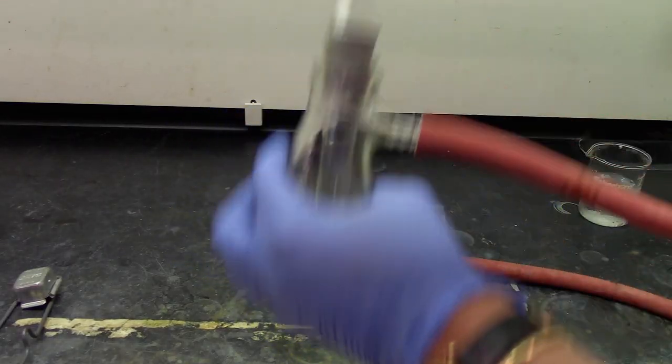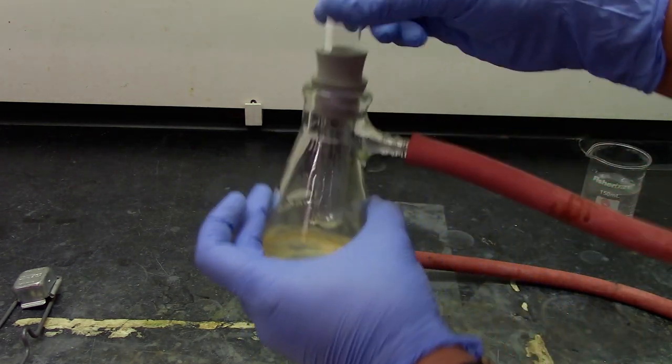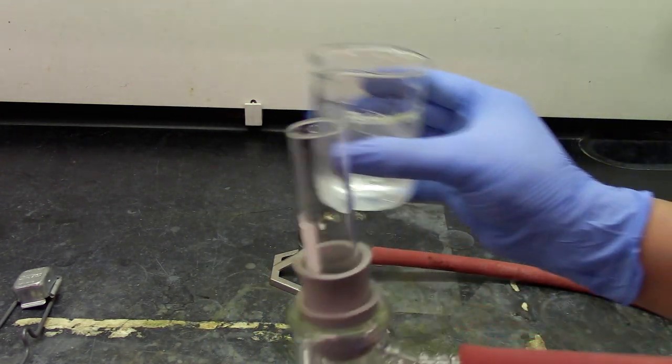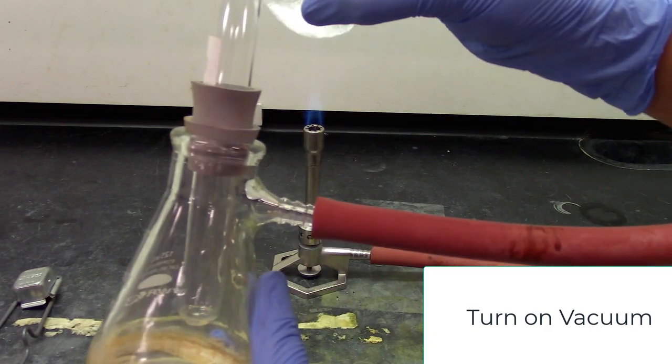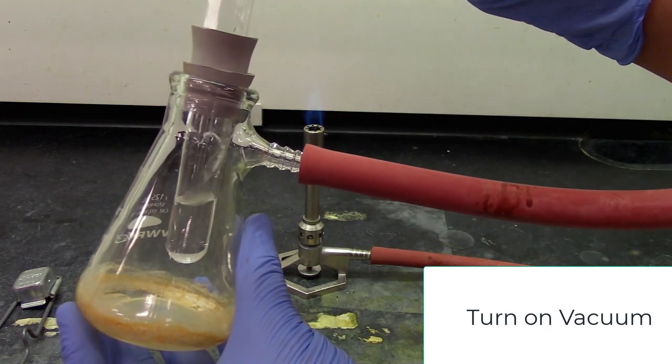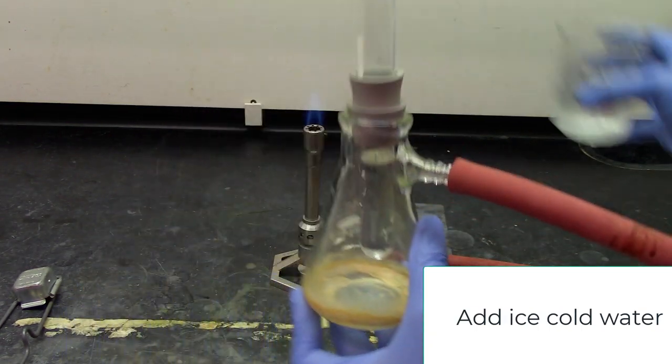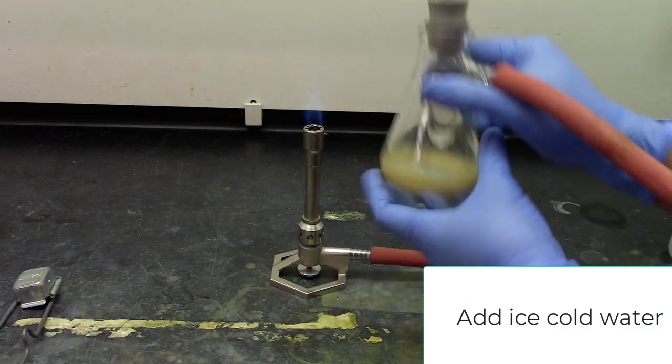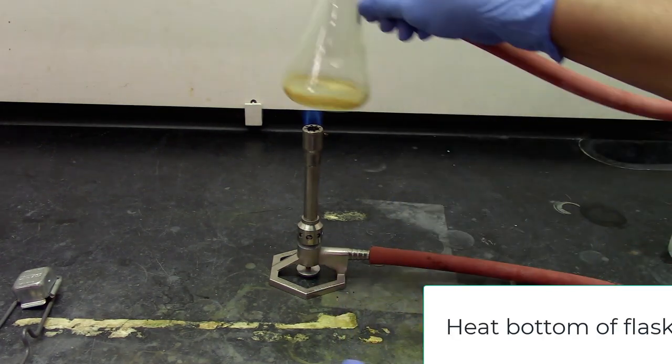For a successful sublimation, this should be the order: first you've got to turn on the vacuum, add ice-cold water in the test tube, and then start heating the bottom of the Erlenmeyer flask on the Bunsen burner.